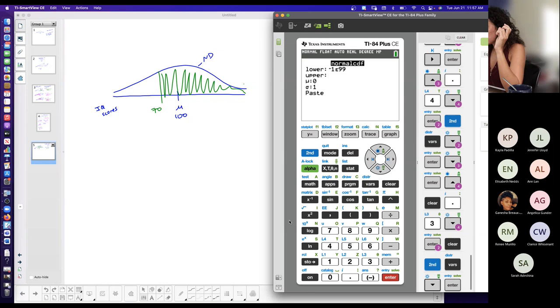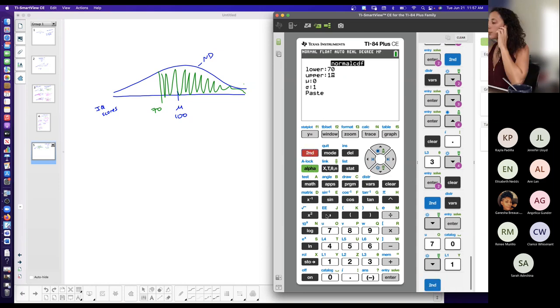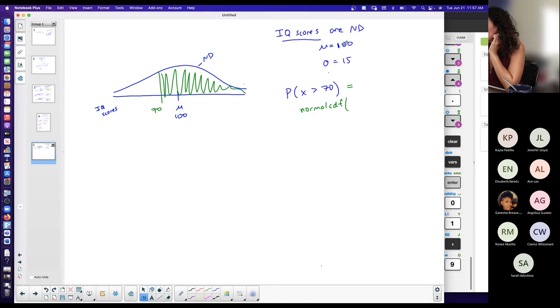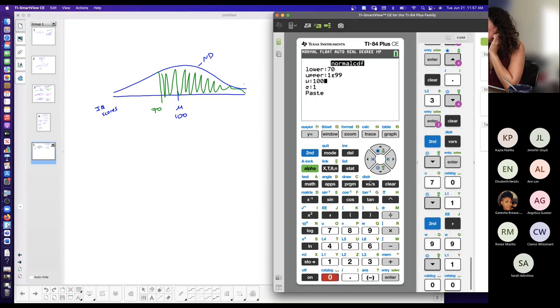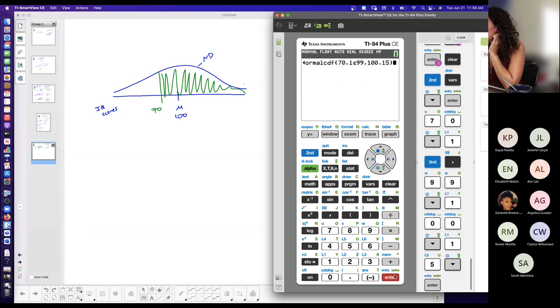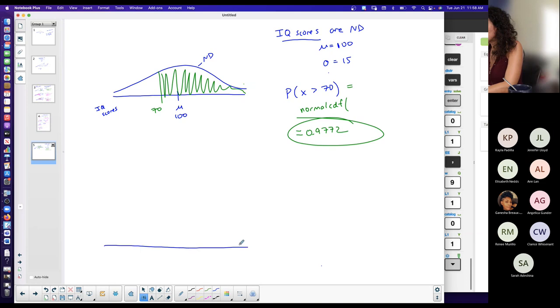My lower bound here is 70. My upper bound is a large positive number, so we use 1 and then E, 2nd comma for the E, and then 99. Now the mean and the standard deviation is going to change because I'm not on a standard normal distribution curve. The mean in this particular case is 100, and the standard deviation is 15. So now I'm going to change these values for my particular case. And I get approximately 0.9772. Now this one I'm taking four digits to the right of the decimal because it's representing a probability or an area.